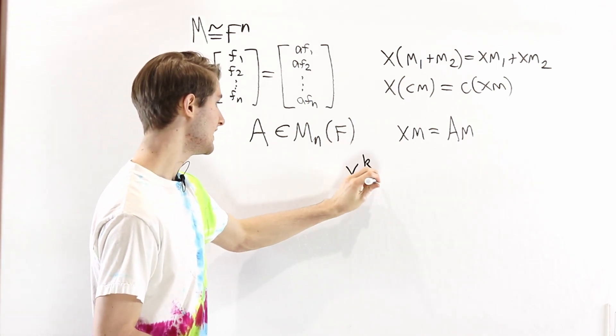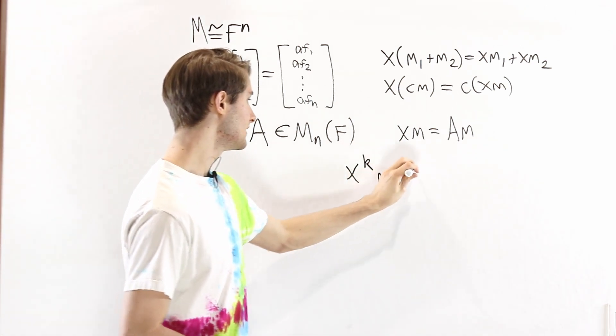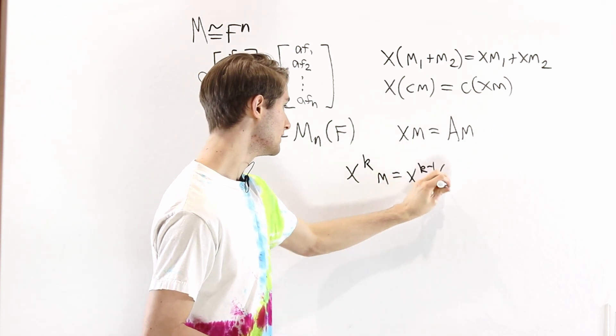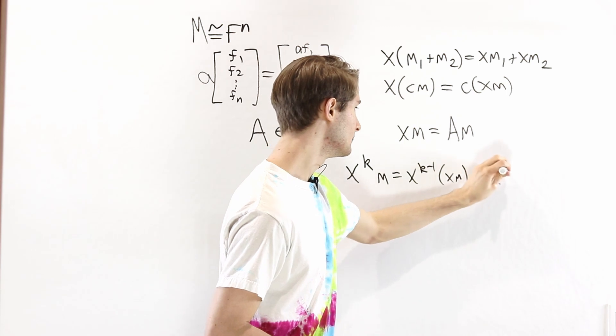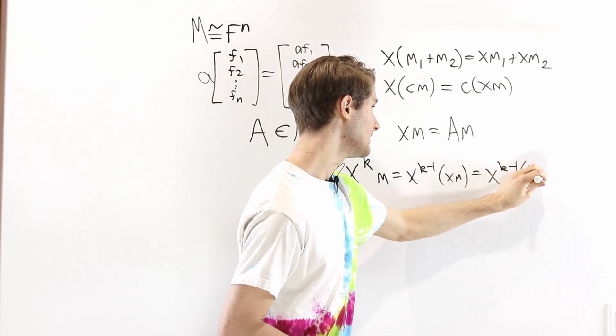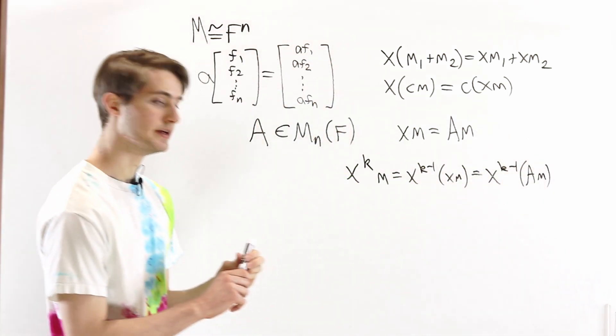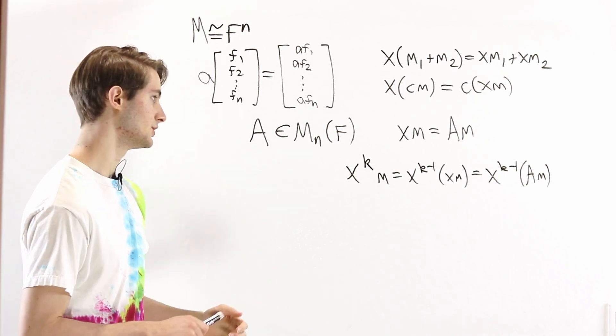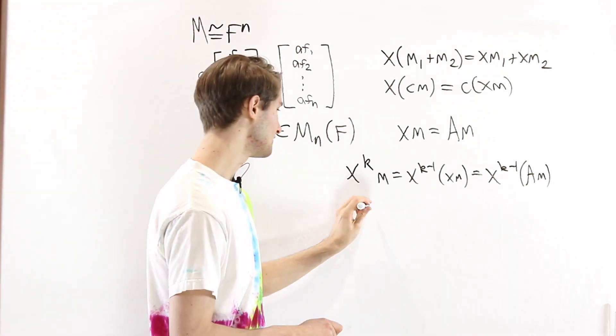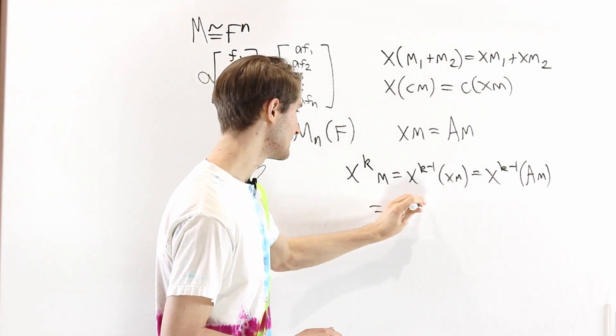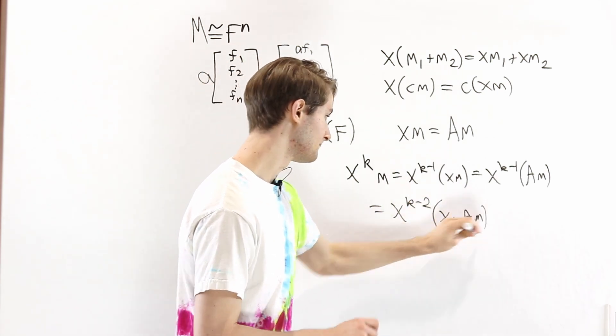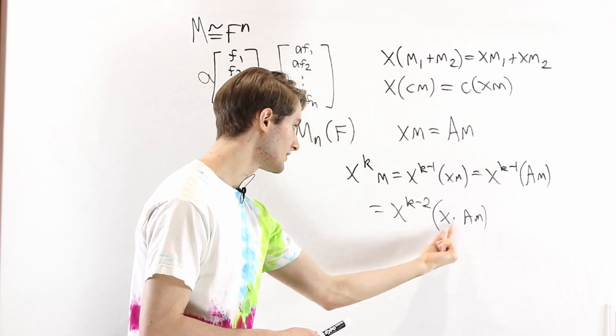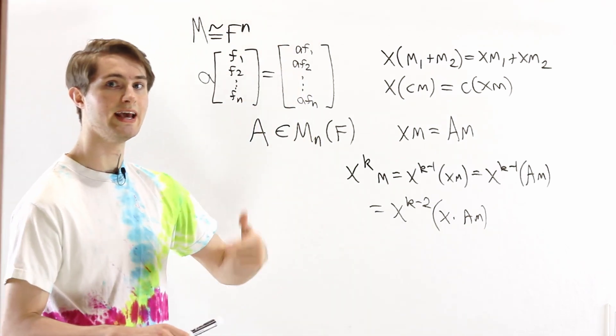Because if we think about x to the k times m, we can write this as x to the k minus 1 times xm. And this xm, we know, is going to be equal to am. Now am is just another vector in the module. So we can repeat the same process. We can write this as x to the k minus 2 times xam. And if this is a vector, x times am is the same thing as a times am.